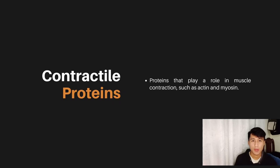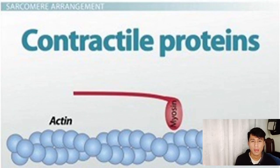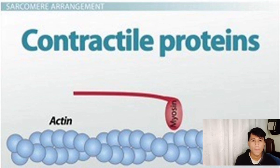Contractile proteins play a role in muscle contraction, such as actin and myosin. Actin is a thin filament that forms the structural basis of muscle fibers, while myosin is a thick filament that interacts with actin to produce the force necessary for contraction. When a muscle is stimulated, the myosin heads bind to the actin filaments and pull them toward the center of the sarcomere, causing it to shorten. The repeated sliding of these filaments is what produces muscle contraction.